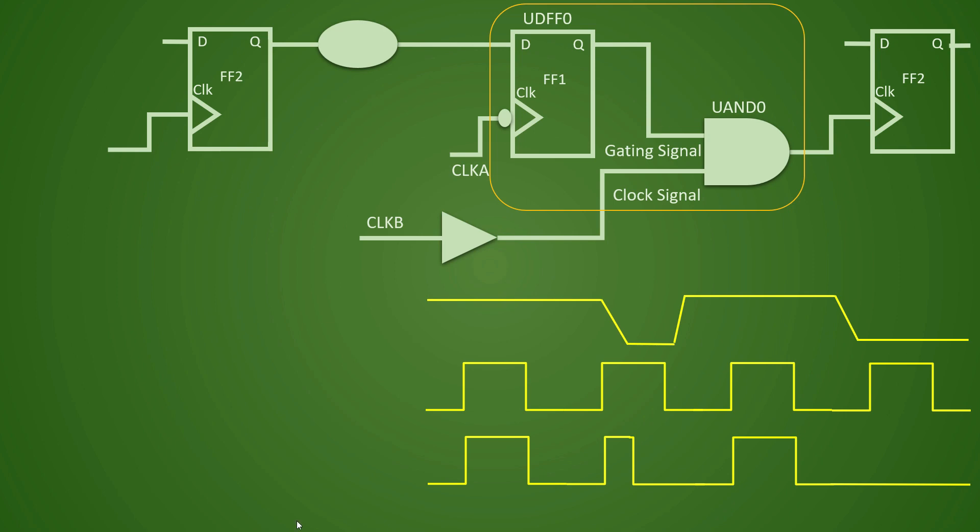Hence if you are asked in the interview what is an ICG, the answer to that is it is an integrated clock gating signal cell which is made as a combination of latch and clock gate made to save area and power in the design.